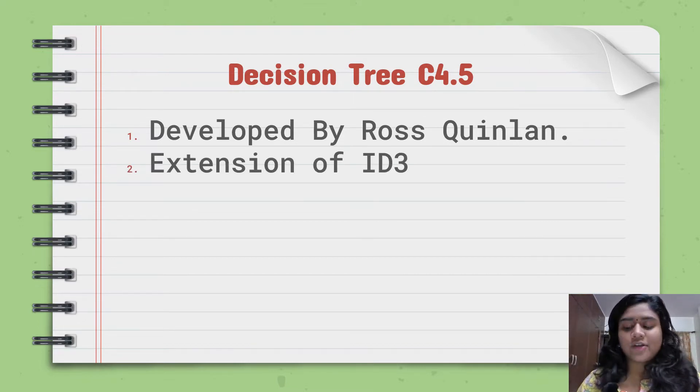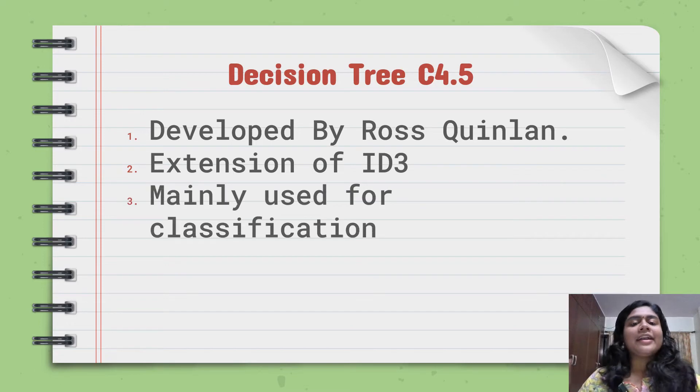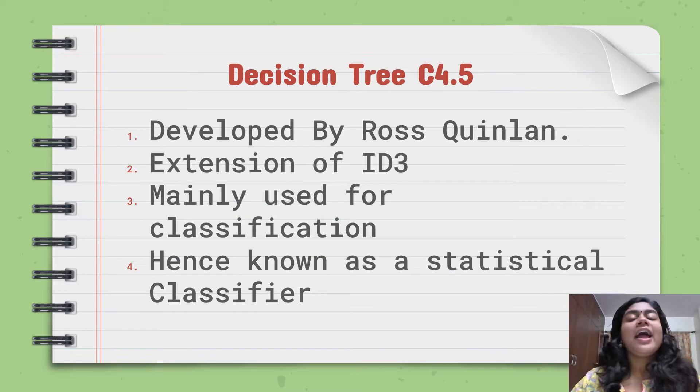Next, it's an extension of ID3. And mainly, this is used for classification. So we have something known as CART, which is a type of decision tree used for classification and regression. But C4.5 is mainly used for classification, and hence it is known as a statistical classifier.